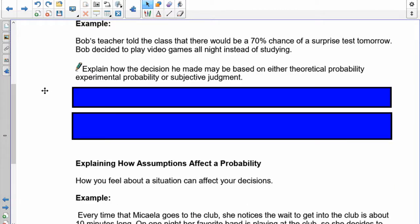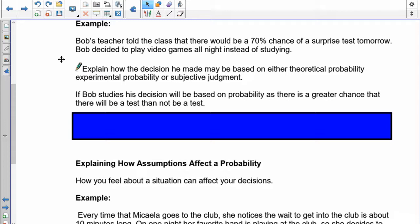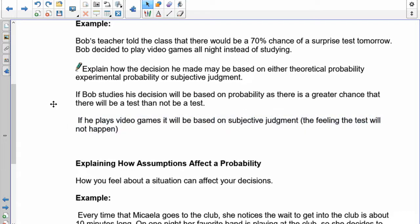Bob's teacher told the class that there would be a 70% chance of a surprise test tomorrow. Bob decided to play video games all night instead of studying. Now, explain how the decision he made may be based on theoretical, experimental, or subjective. So, pause the recording and explain how the decision could be made based on either one of those three. All right, so the first one is, if Bob decides to make his decision based on the probability, as there is a greater chance that there will be a test than not be a test, that would be theoretical. Okay? If he keeps playing and he just says, well, I don't think it's going to be there, that's going to be subjective. There's no chance for Bob to do an experiment here or collect data on this because he's already given the probability already. So, it's going to be either go with the statistics, which is theoretical, or go with your gut feeling that it's not going to happen, and that's subjective.